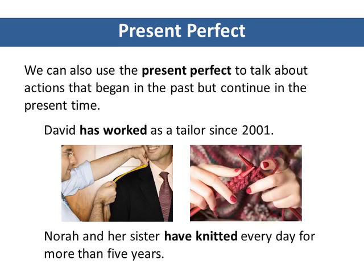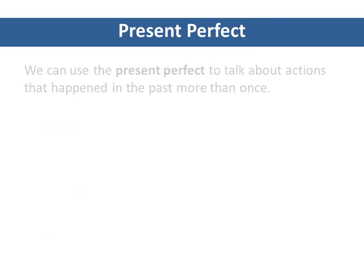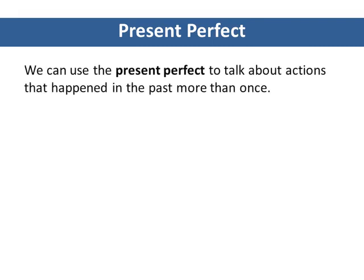David continues to work as a tailor in the present time, and Nora and her sister continue to knit every day. Lastly, we can use the present perfect to talk about actions that happened in the past more than once.